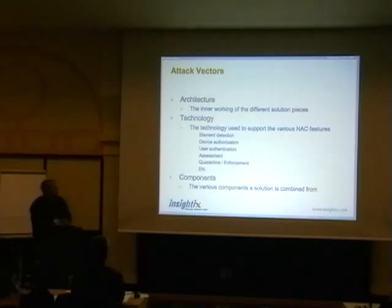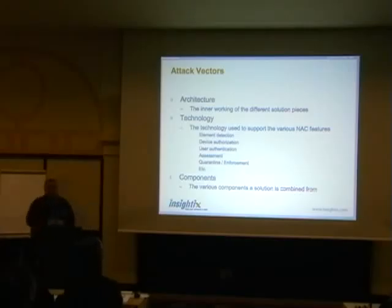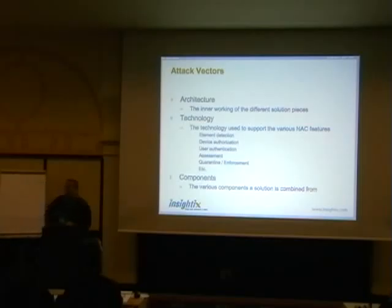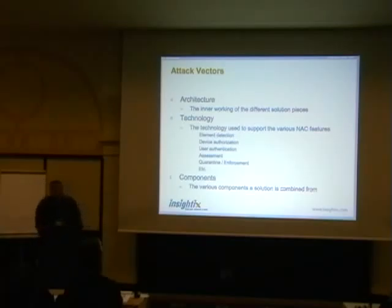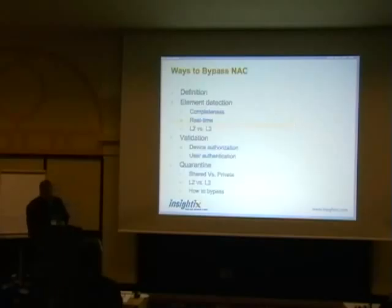So what are the attack vectors? Basically, the nice thing about this is that we can attack everything. Like with any other technology, we can take different pieces and see where we can actually put an attack. First is the architecture — how this actually works, how the different parts interact, what they're sending each other. Technology: each feature can be attacked — the element detection process, the device authorization, the assessment, the quarantine. The various components can also be attacked: the client itself, the services being used, and the infrastructure itself.